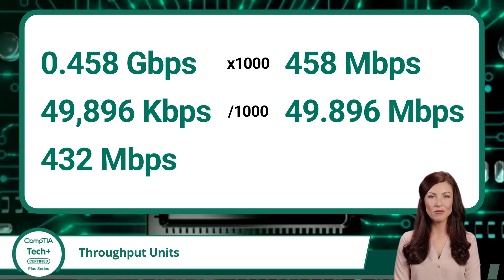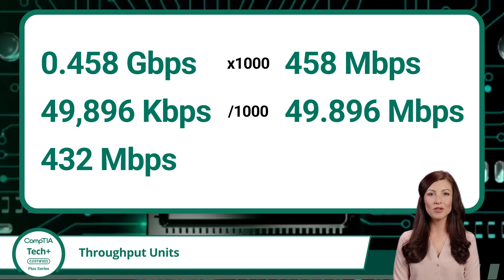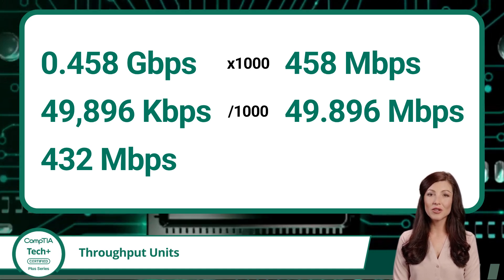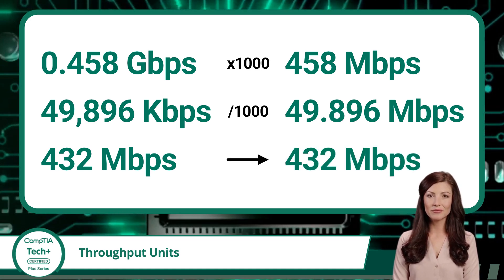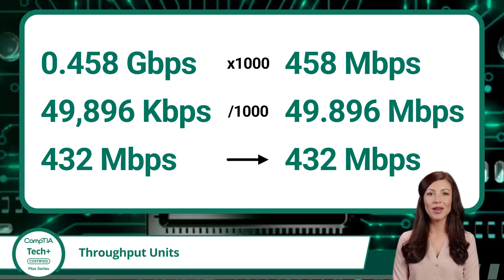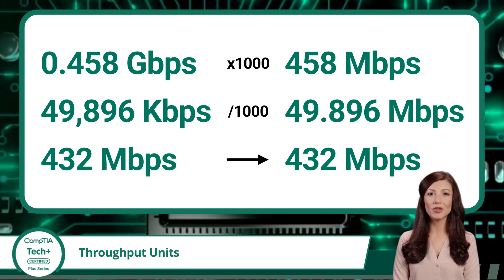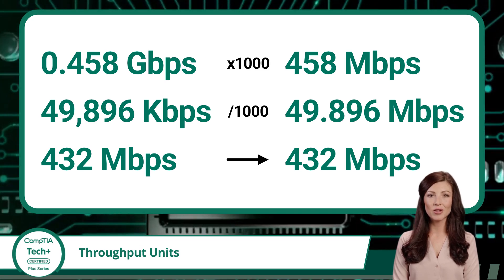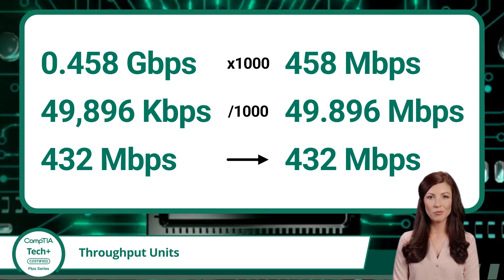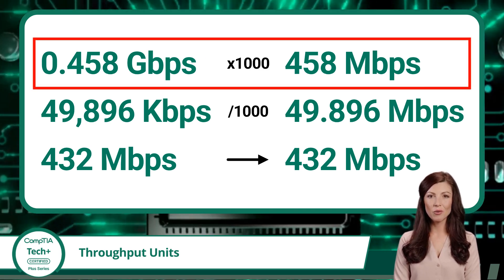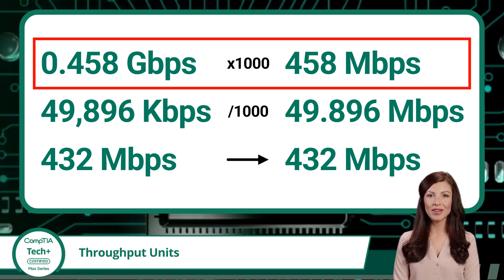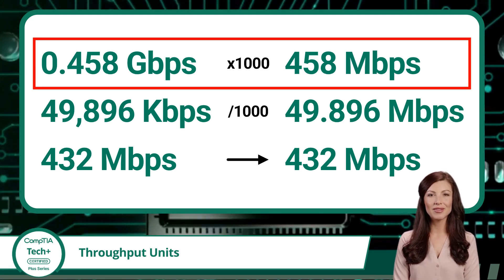At the bottom, 432 megabits per second is already in the correct unit of measure, so no conversion is needed. Comparing these values is now much easier as they have all been converted to the same throughput unit. Taking a quick peek at our original values, we can now see that 0.458 gigabits per second is the fastest of the three values.